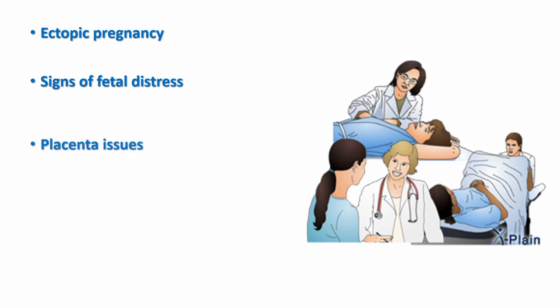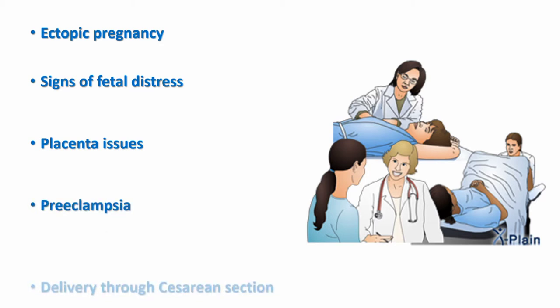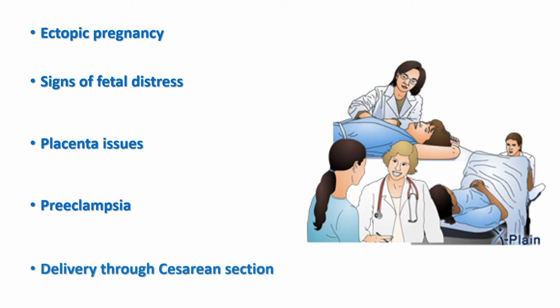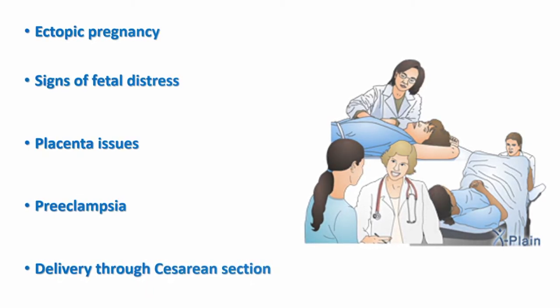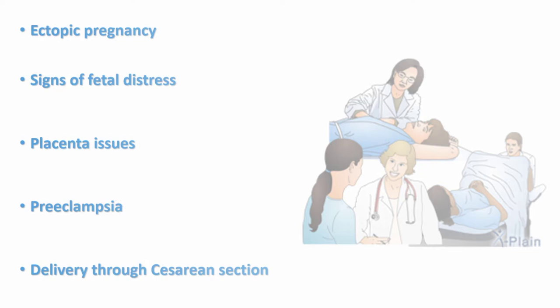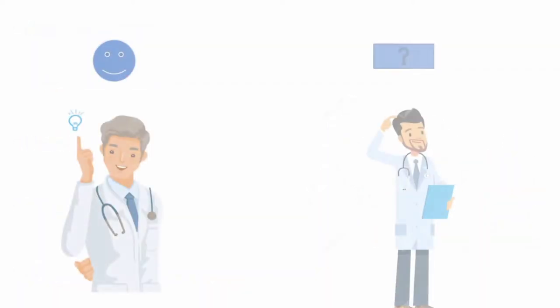In pre-eclampsia, the mother has high blood pressure. It usually begins after 20 weeks of pregnancy in a woman whose blood pressure had been normal. It is caused by genetic patterns, blood vessel problems, having a history of high blood pressure, and autoimmune disorders. Next, we are going to see about the basic medical terms and definitions during pregnancy and childbirth.